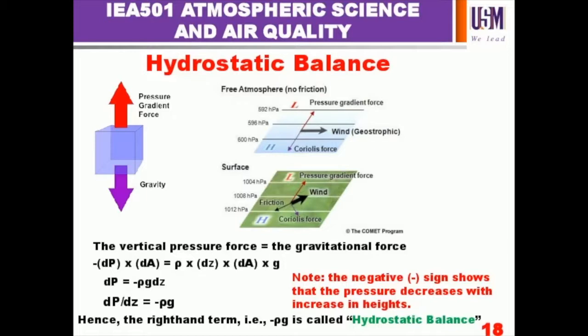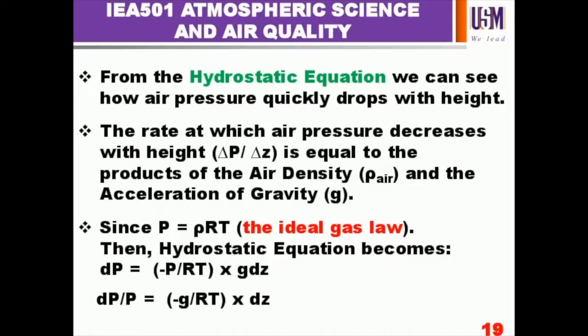That is what is keeping particles in the cloud and everywhere. From that equation we just discussed, we can see that air pressure quickly drops with height. The rate at which air pressure decreases with height — the small change in pressure divided by small change in height — equals the product of air density and acceleration due to gravity.